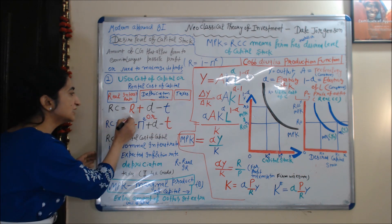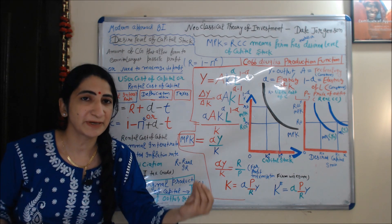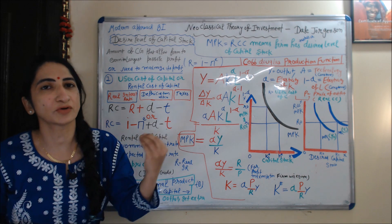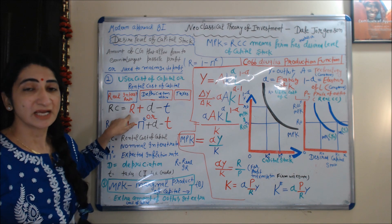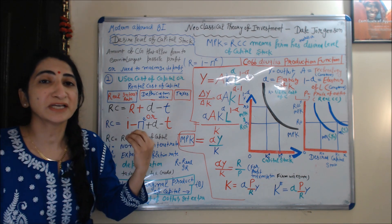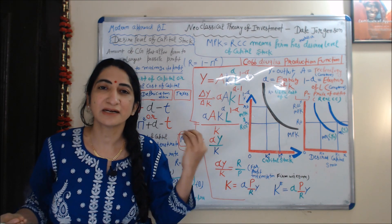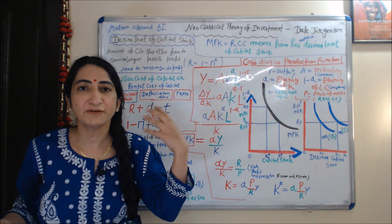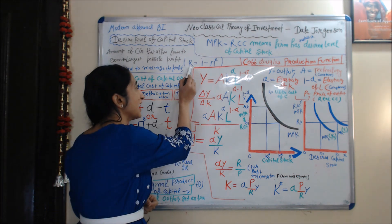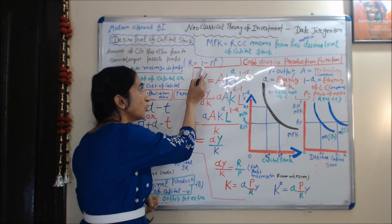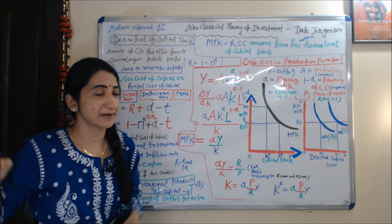First of all, we will talk about real interest rate. When a firm borrows funds for the purchase of capital, obviously the firm needs to pay some amount of interest. For calculating the real interest rate, we need to subtract the inflation rate from the nominal interest rate. In this equation, R is the real interest rate, I is the nominal interest rate, and π^E is the expected inflation rate.